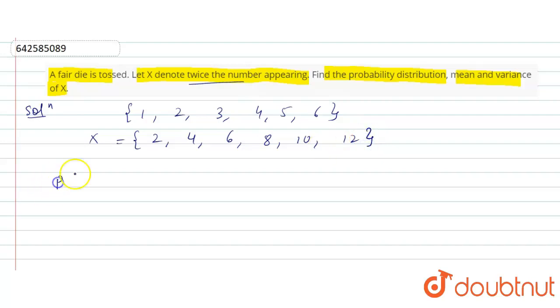So, probability of x equals to 2 is only when I will get the number itself as 1. So, this is 1 by 6. Similarly, probability of x as 4 is the same as when I will get the number as 2. So, it is again 1 by 6.